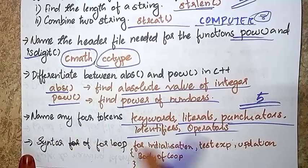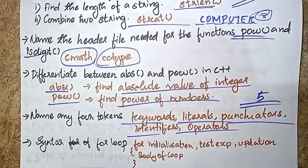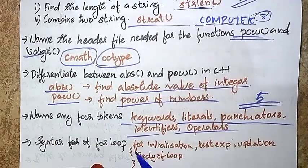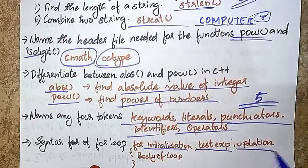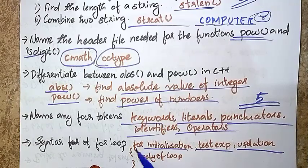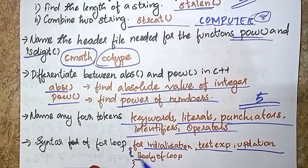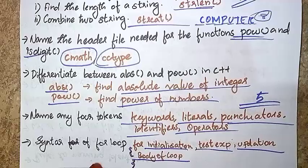Then the syntax of a for loop: Initialization, Test Expression, Update Expression, then curly brace, then body of loop, then closing curly brace.